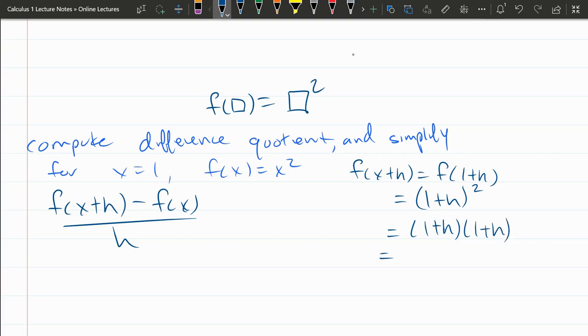So remember, multiply first, inside, outside, last. So 1 times 1 is 1, 1 times h plus h times 1, that's 2h, plus h times h is h². So that's 1 + 2h + h².